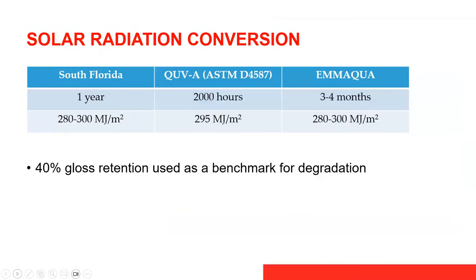Here is a nice conversion showing solar radiation levels. One year in South Florida is equal to about three to four months of AMAQUA testing — or about 280 to 300 megajoules per meter squared. Keep in mind that 40% gloss retention is used as a benchmark for degradation: once it gets below 40%, you're really going to start to see degradation clearly.